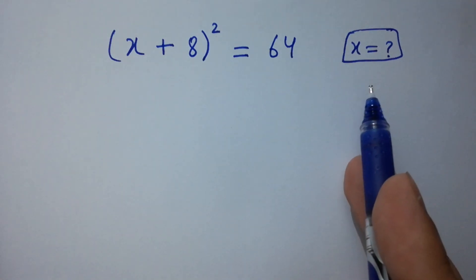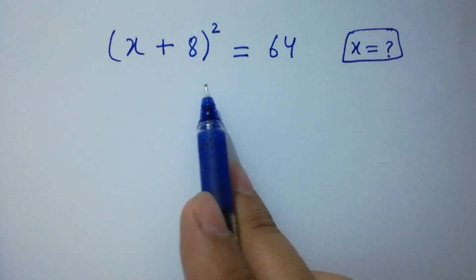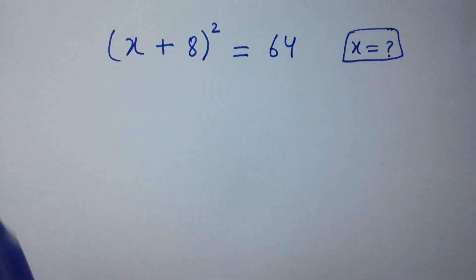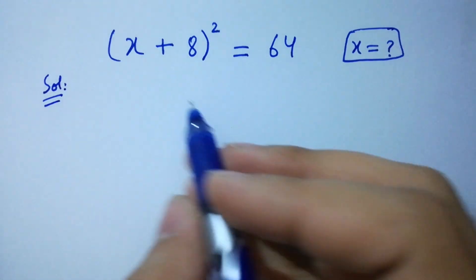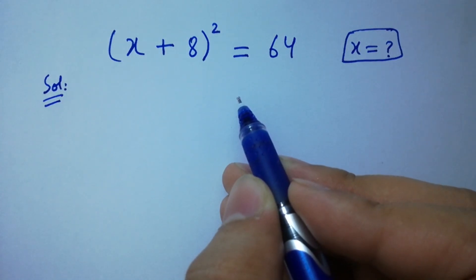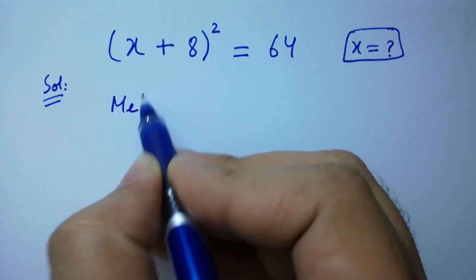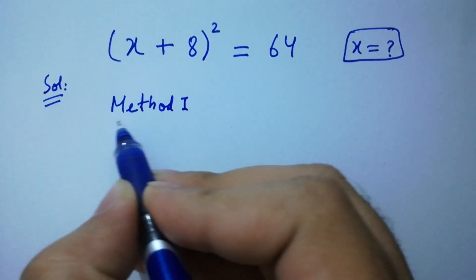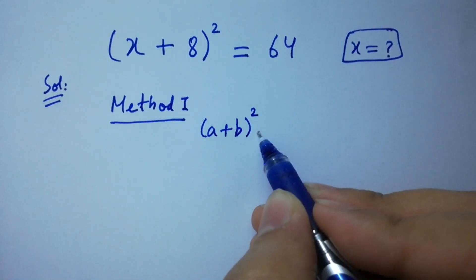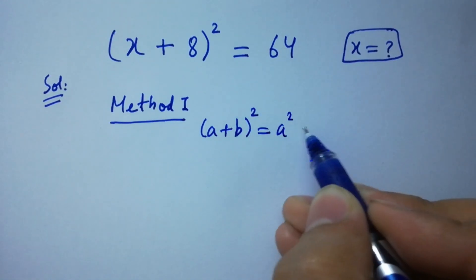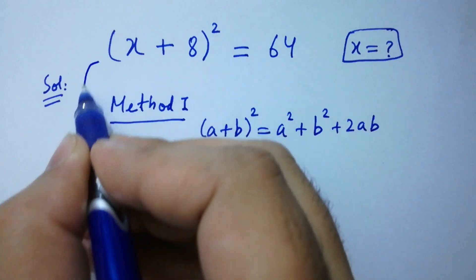Hello friends, find the value of x if (x + 8) whole square equals 64. Let's have a solution. This question can be solved by two methods. Method 1 uses the formula (a + b) whole square equals a square plus b square plus 2ab. Apply this formula.